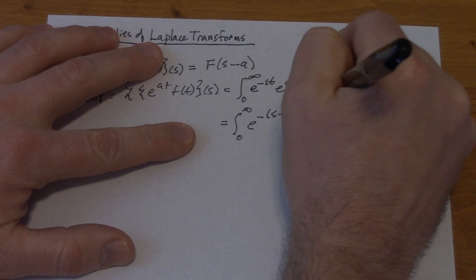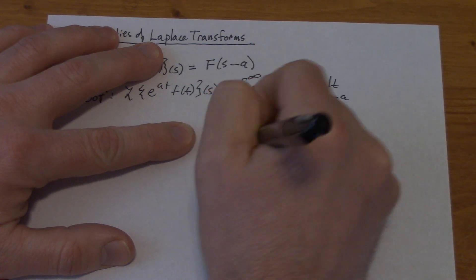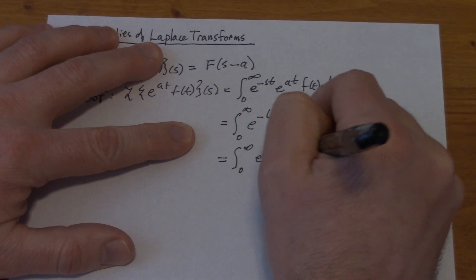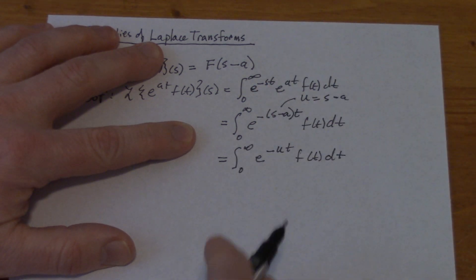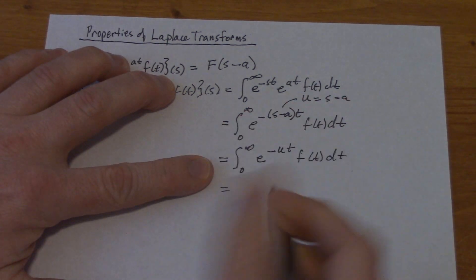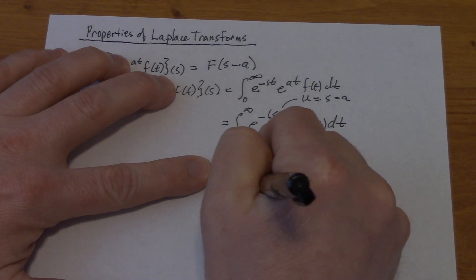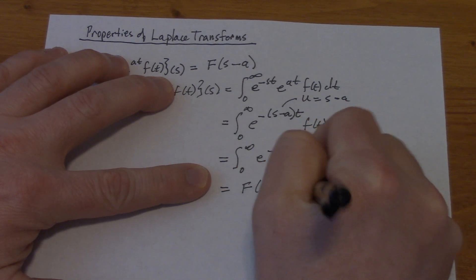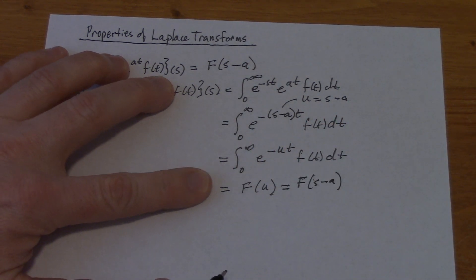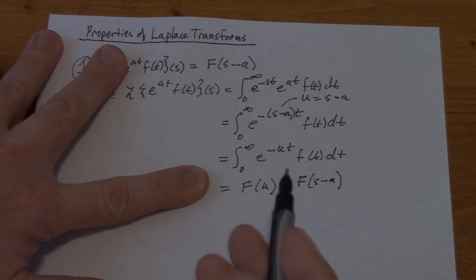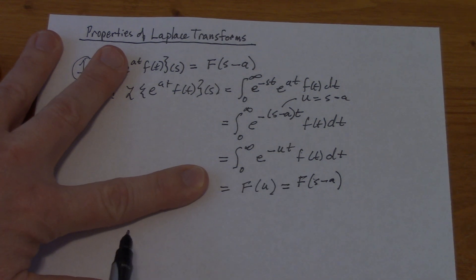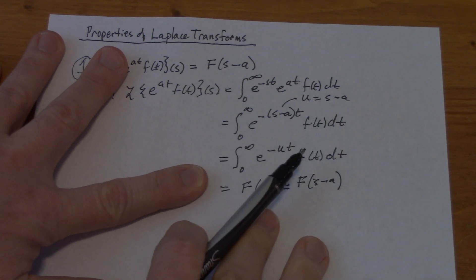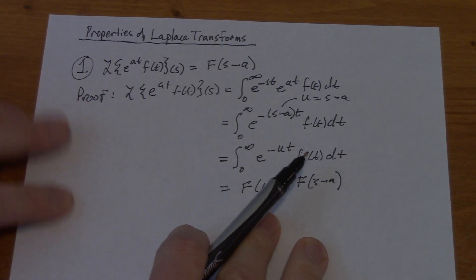We're going to let u equal s minus a. So this would be the integral from zero to infinity of e to the minus ut, f of t dt. That's the Laplace transform by definition, so that's capital F of u. Then we just substitute our s minus a back in, so this is capital F of s minus a. That's going to be particularly useful — if we need to find the Laplace transform of e to the 2t cosine of 3t, we just find the transform for cosine of 3t and then replace s with s minus 2.